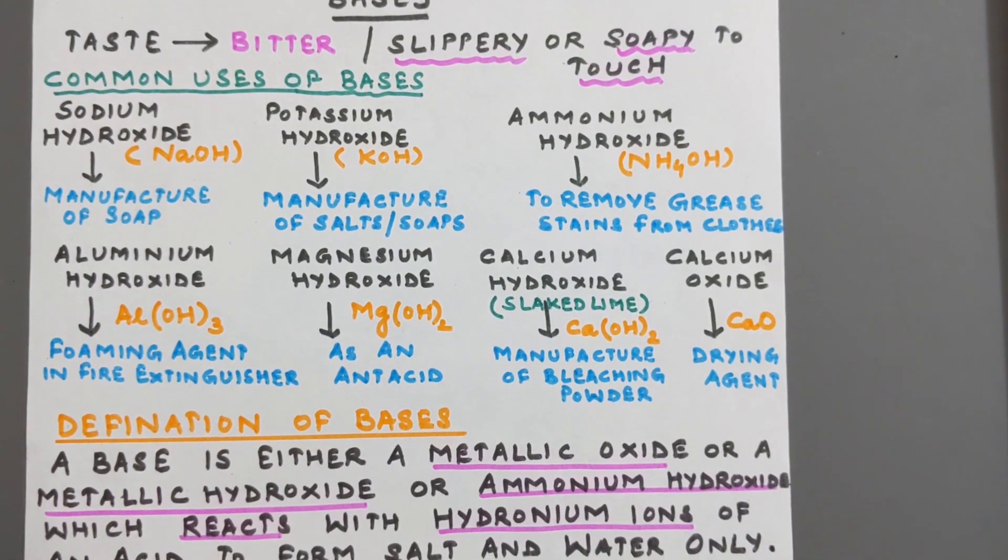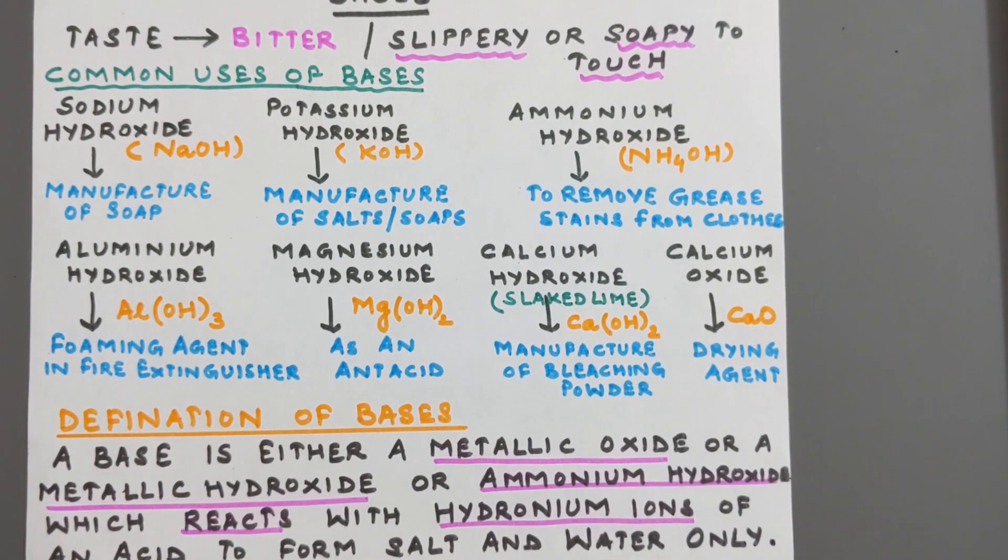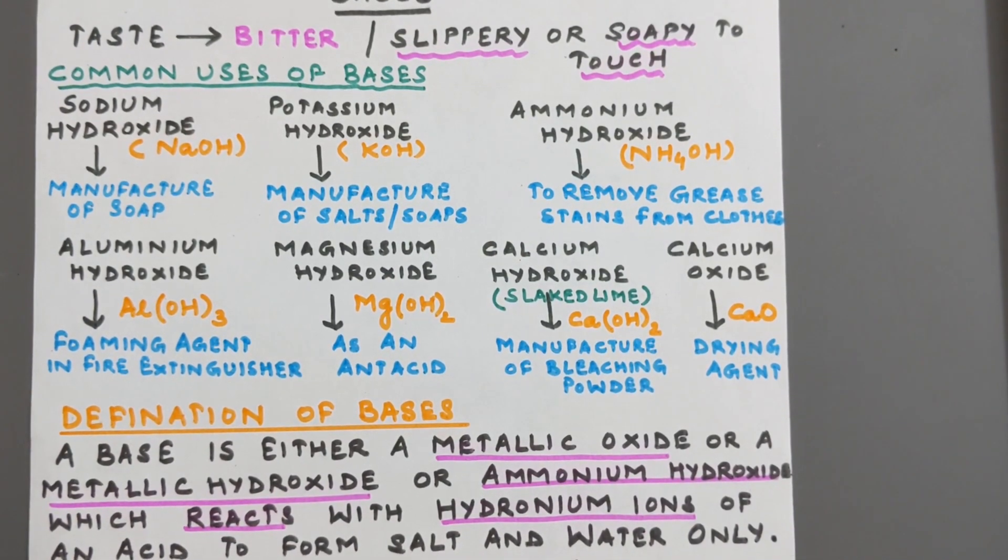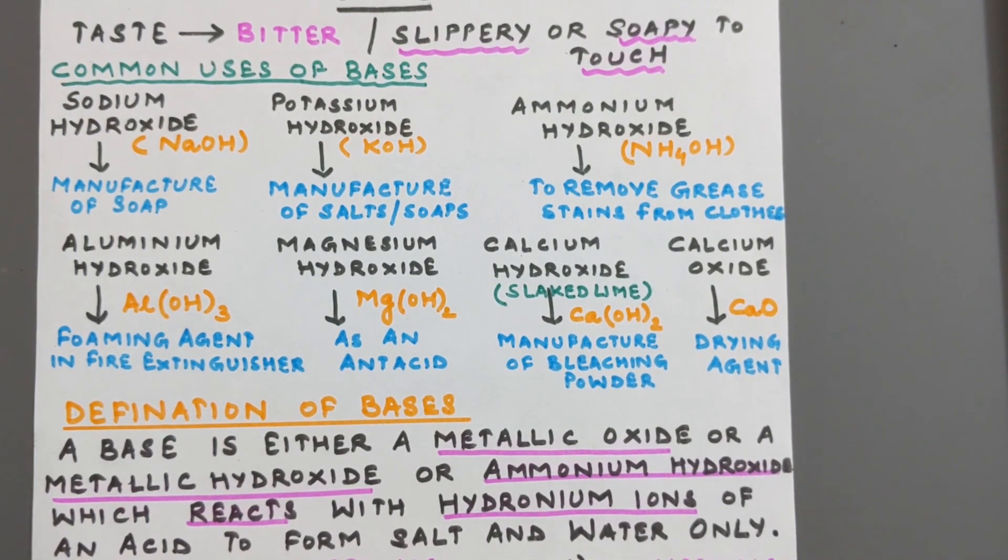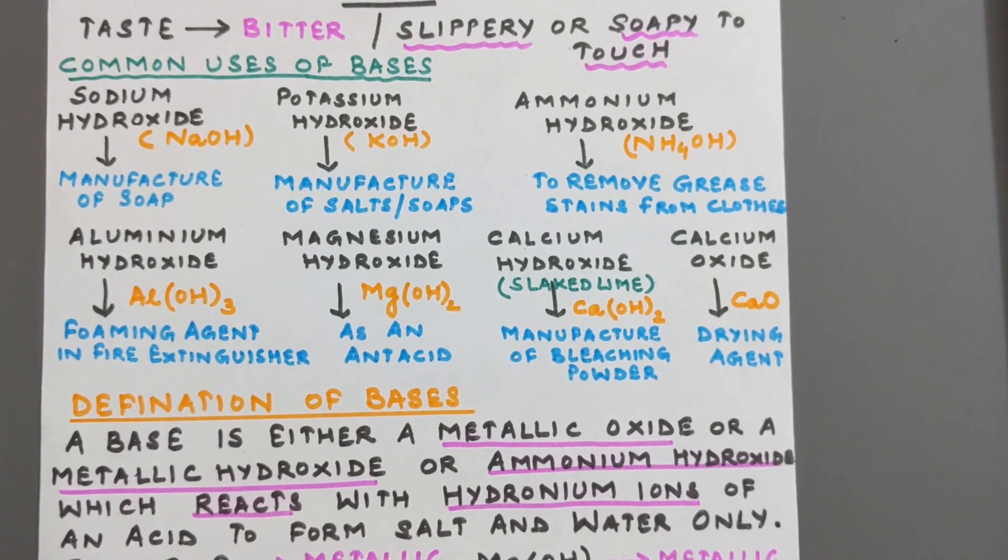Ammonium hydroxide NH4OH is used to remove grease stains from clothes. Aluminium hydroxide Al(OH)3 is used as a foaming agent in fire extinguishers.